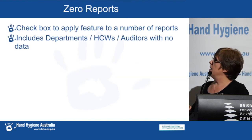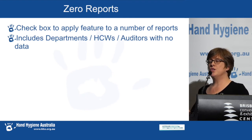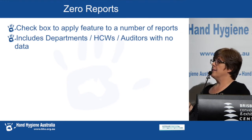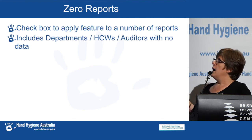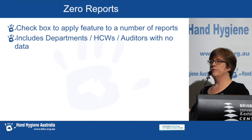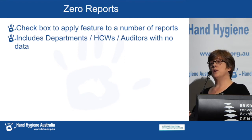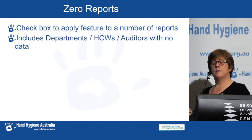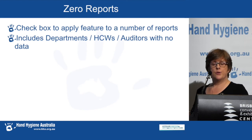The zero reports feature is still in development, but it will be added to all current reports as a checkbox you'll be able to tick. If you check the zero reports box, you'll get a report that includes departments, auditors, or whatever you're running your report for that did not submit any data. For example, if you run a department report for the last 12 months and want to make sure all departments submitted data, you can check the box and you'll get zeros against departments that had no data. You'll also be able to see any auditors who have not collected any data — very handy for validation purposes.